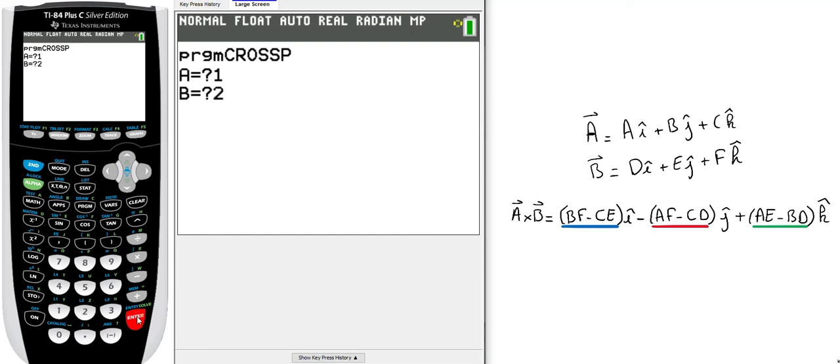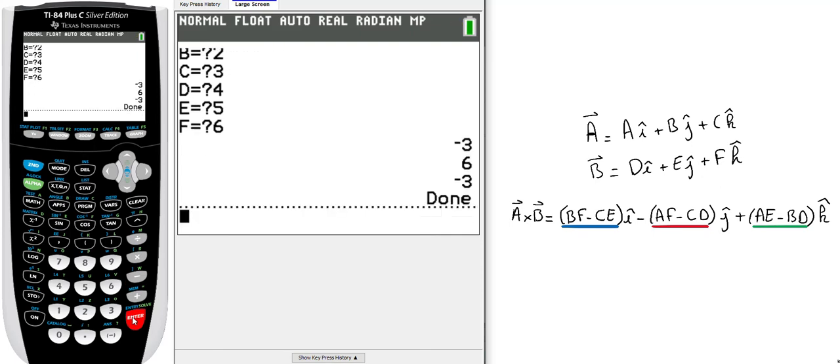That's my answer. The cross product of i hat plus two j hat plus three k hat cross four i hat plus five j hat plus six k hat will be negative three i hat plus six j hat minus three k hat.